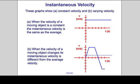These graphs show constant velocity and varying velocity. In the first case, velocity stays the same value as time progresses. In the second graph, the value for velocity is changing. So the instantaneous and average velocities could be different.